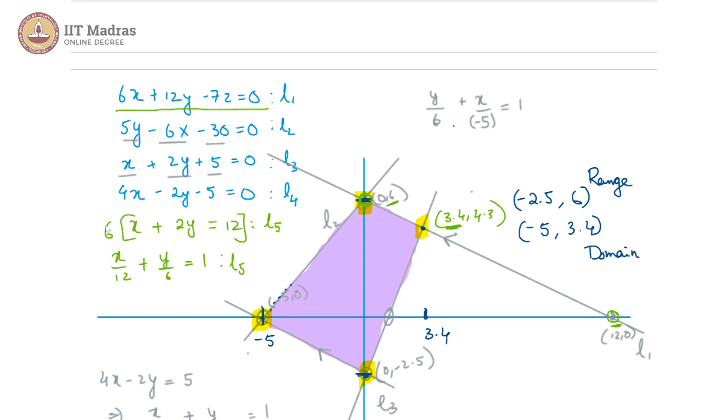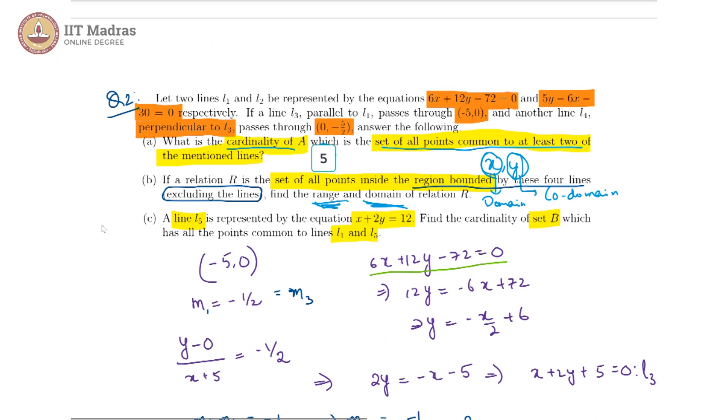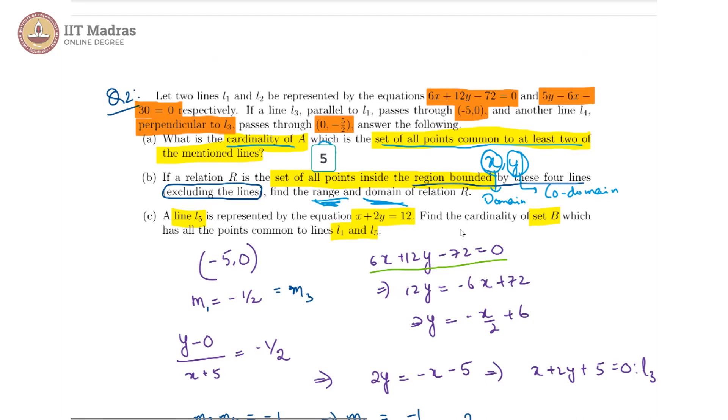Therefore, L1 and L5 are the same lines. Then the question is asking find the cardinality of set B which has all the points common to the lines L1 and L5. There are infinite points because they are the same line. So the cardinality of set B is infinite.